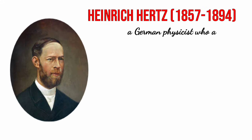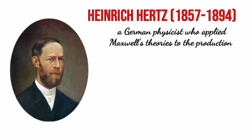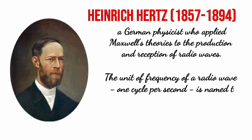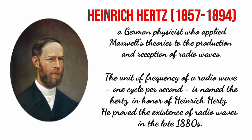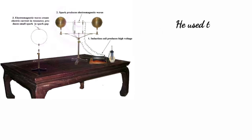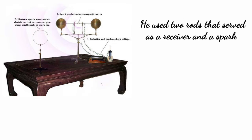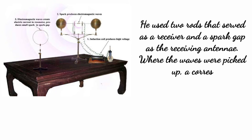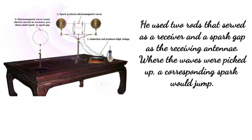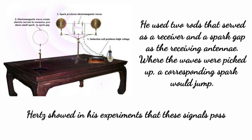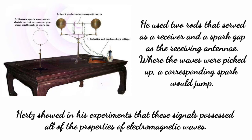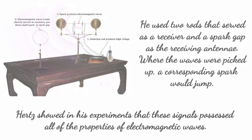Heinrich Hertz, a German physicist, applied Maxwell's theories to the production and reception of radio waves. The unit of frequency of a radio wave — one cycle per second — is named Hertz in his honor. He proved the existence of radio waves in the late 1880s. He used two rods that served as a receiver and a spark gap as the receiving antennae. Where the waves were picked up, a corresponding spark would jump. Hertz showed in his experiments that these signals possessed all of the properties of electromagnetic waves.